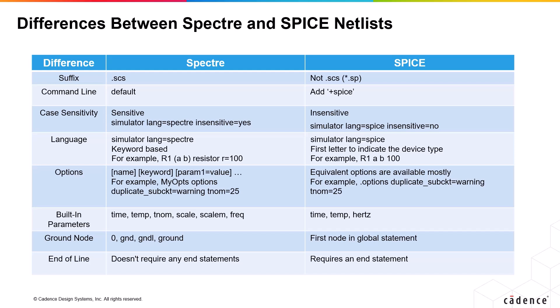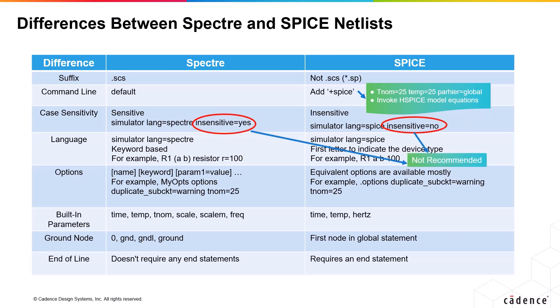With the +SPICE switch option, it behaves like HSPICE and sets the TNOM value to 25, TEMP value to 25, and parameter inheritance set to global, invoking HSPICE model equations. With respect to case sensitivity, Spectre language is case-sensitive, so it uses lowercase for all keywords, while SPICE is case-insensitive. A Spectre NETLIST will have a SIMULATOR LANG equal to SPECTRE at the beginning of the file, while a SPICE NETLIST will have SIMULATOR LANG equal to SPICE.